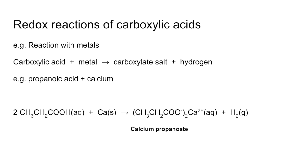Why is it redox? Calcium starts in its zero oxidation state as the element, and in the salt it goes to 2+, so that's been oxidised. Whereas in the acid, hydrogen is in its +1 oxidation state, and in H₂ as the element it's zero — so that's been reduced. So we've got both oxidation and reduction taking place in that reaction.